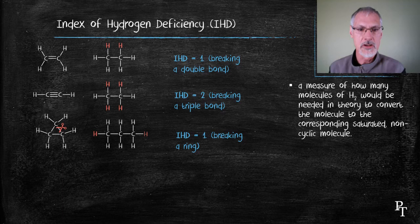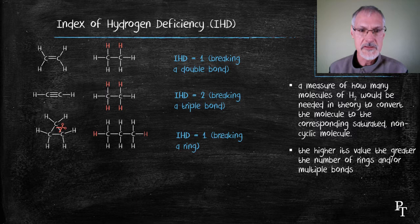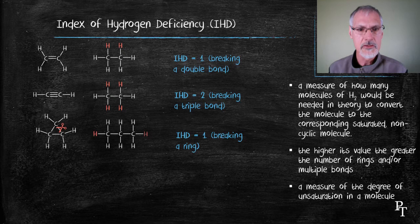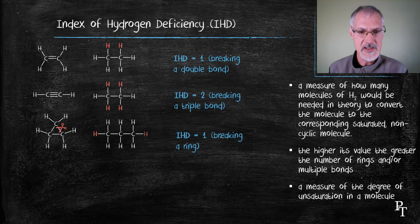So you can see that the greater the number of multiple bonds or rings in a structure, the greater its hydrogen deficiency. And the hydrogen deficiency gives me an index of how unsaturated a compound is. The higher the number, the more unsaturated it is.